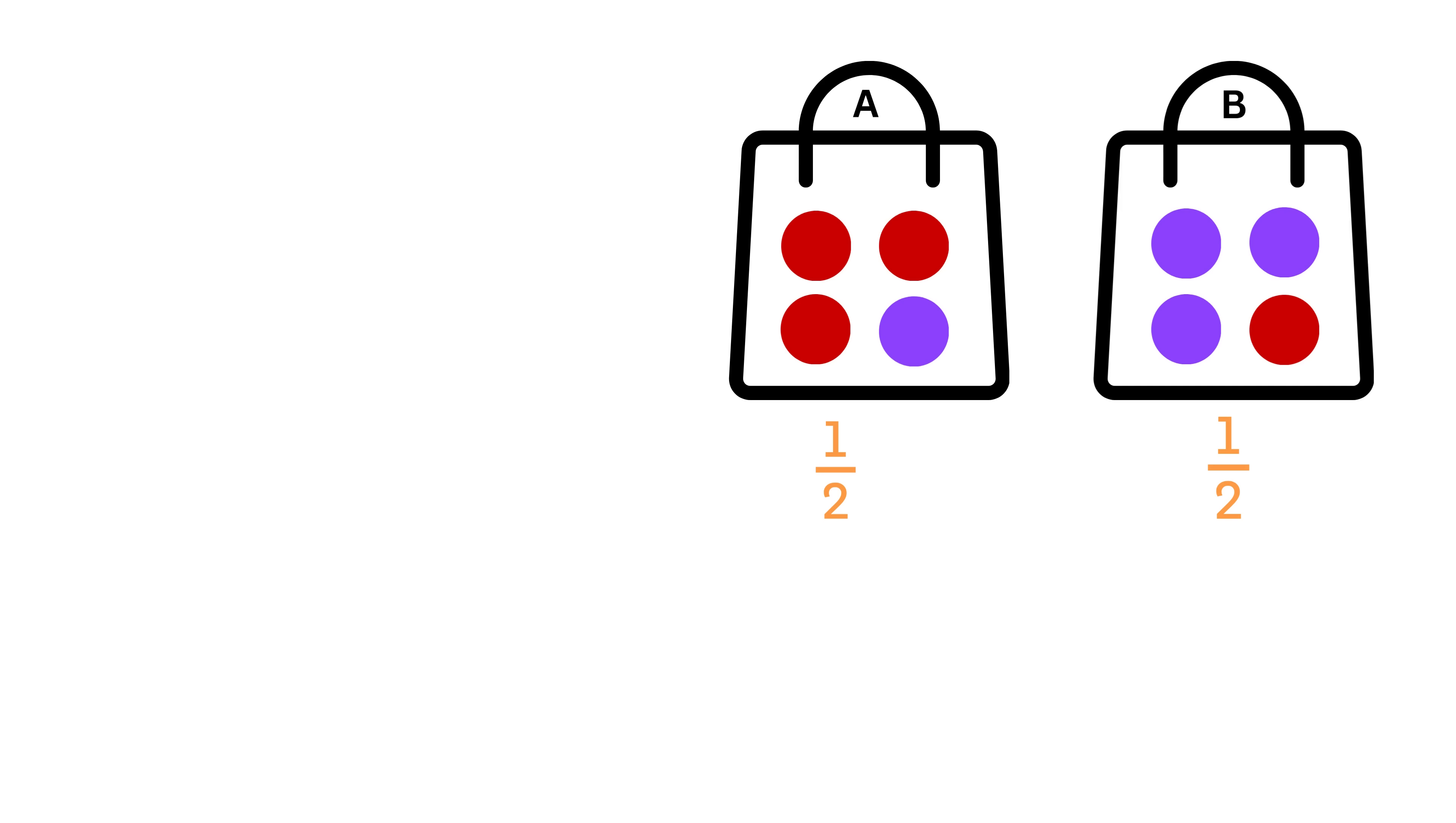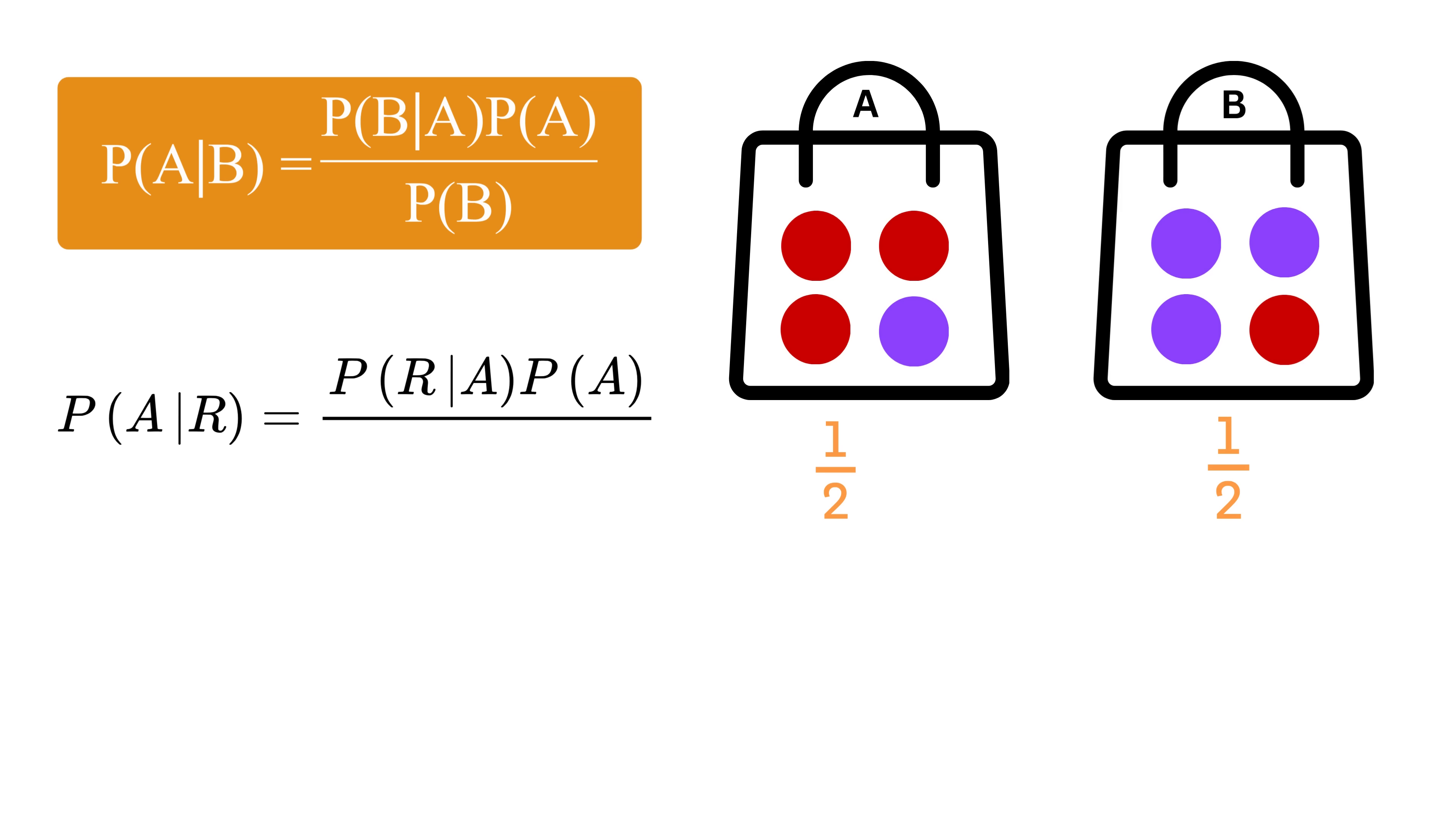Now, if we want to find the same using formula, we apply Bayes' theorem. The probability of bag A given red is equal to the probability of red given bag A multiplied by the probability of bag A and divided by the total probability of red. Substituting the values, probability of red given bag A is 3 over 4, probability of bag A is 1 over 2, and the total probability of red is 3 over 8 plus 1 over 8, which is 1 over 2. So the final result is 3 over 4, or 75%.